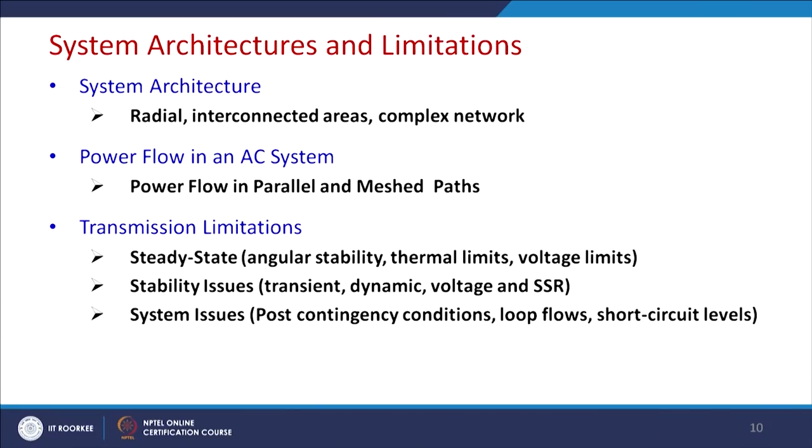Let us understand the system architectures. Generally, transmission lines have different architectures — radial, interconnected, and complex networks. Power flow in AC systems along parallel and mesh paths has transmission line limitations. The steady-state limitations are angular stability, thermal limits, and voltage limits. Angular stability means the power transmitted is given by V1·V2/x·sin(δ), so the angle δ cannot exceed 90 degrees.